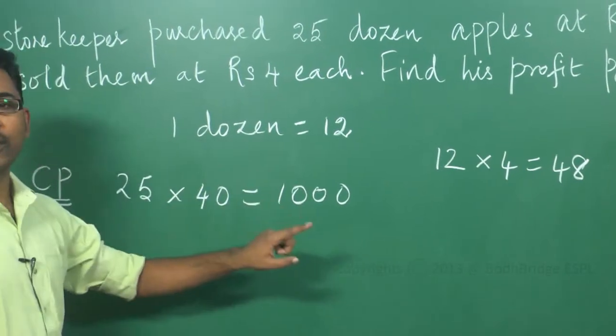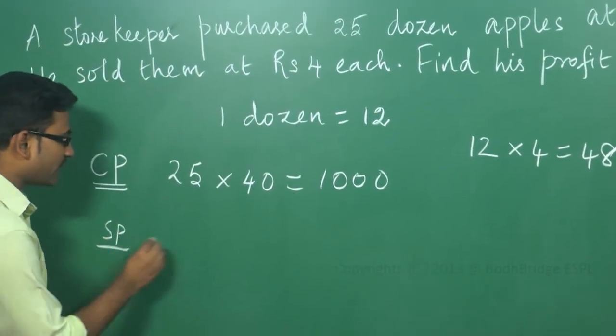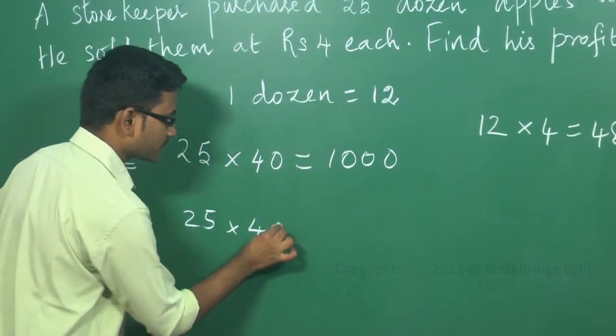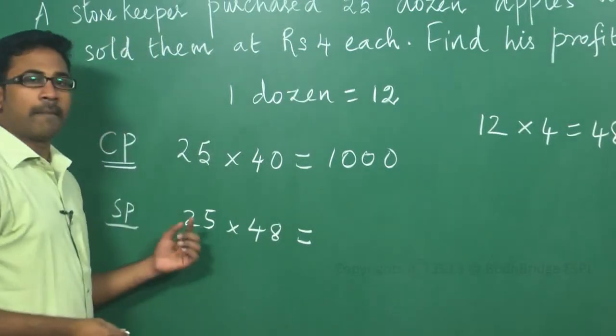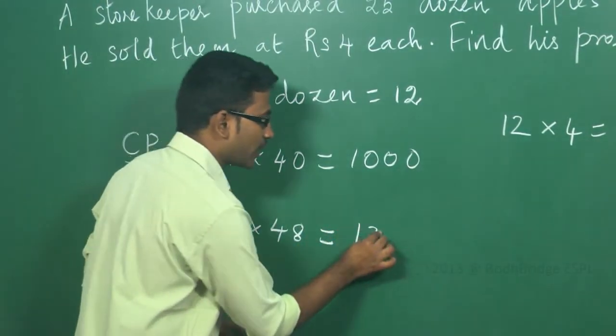40 is becoming 48. So, on the whole, now all the 25 dozens he is selling at Rs. 48 per dozen. Multiplying 25 into 48, it will be Rs. 1,200.